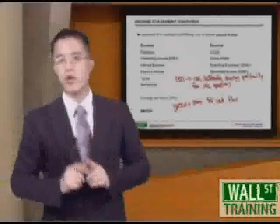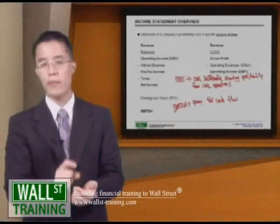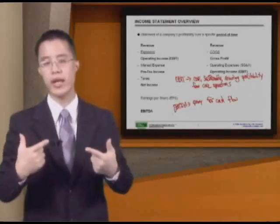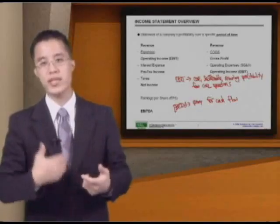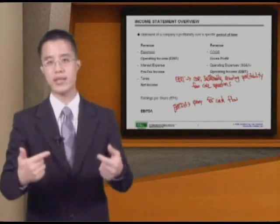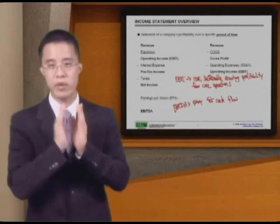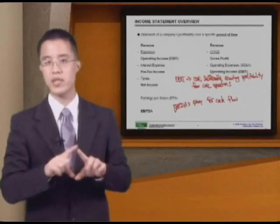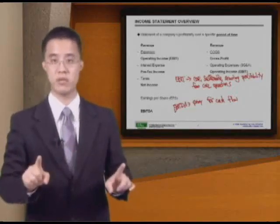EBIT is our Core Sustainable Recurring Profitability from our Core Operations — the core dollars we are able to generate. For example, if we're Walmart, a retailer, what we do best is buy stuff and resell it at a higher price. These are our Core Operating Activities, and this is the amount of money we generate from that. This excludes interest expense because that is a capital structure related decision, not an operating decision.